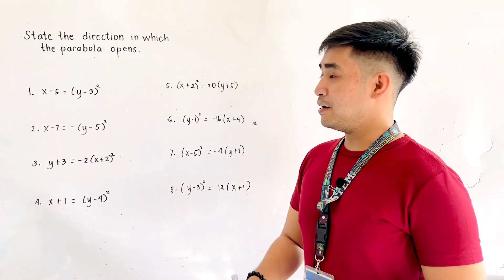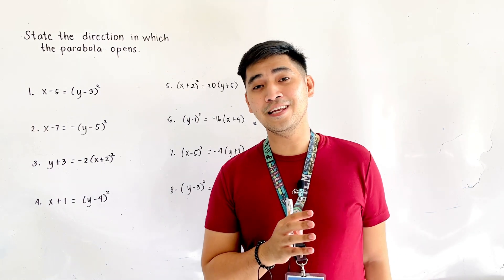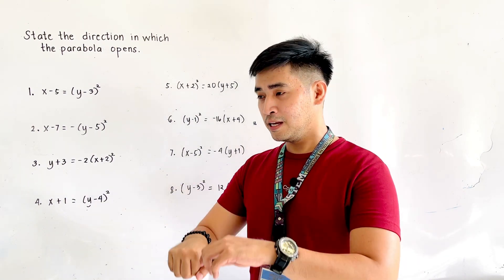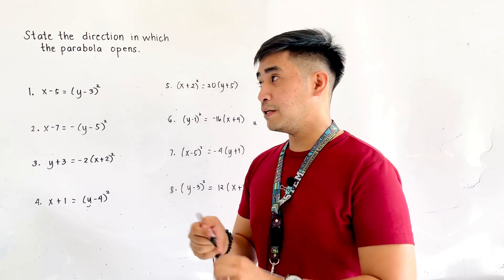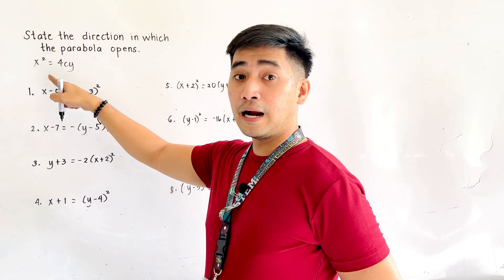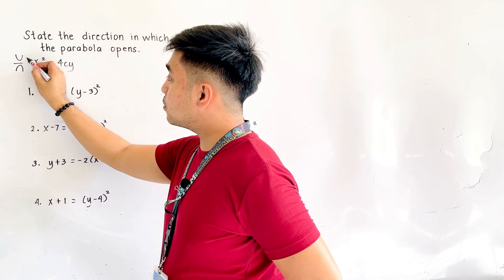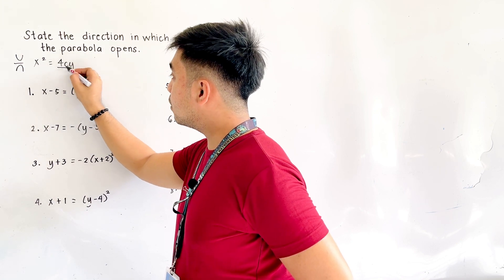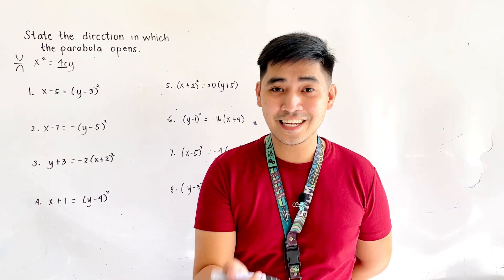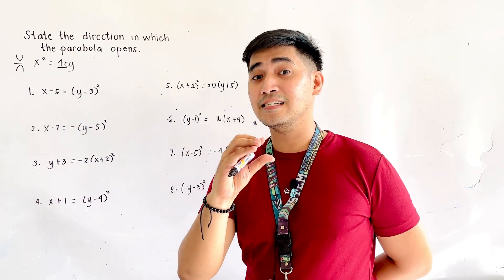Our problem here is that we need to state the direction in which the parabola opens. But before we identify the opening of the parabola, let us first go back to our discussion regarding the standard equation of the parabola. If the equation is x squared is equal to 4cy, the parabola is either opening upward or downward, depending on the sign of 4c. We will be using c as our variable.